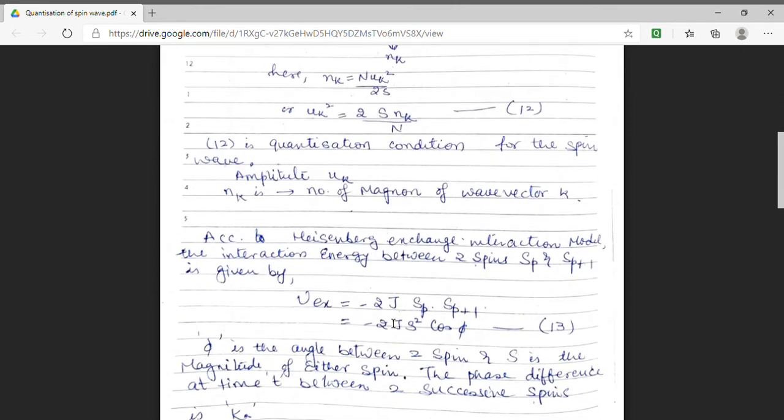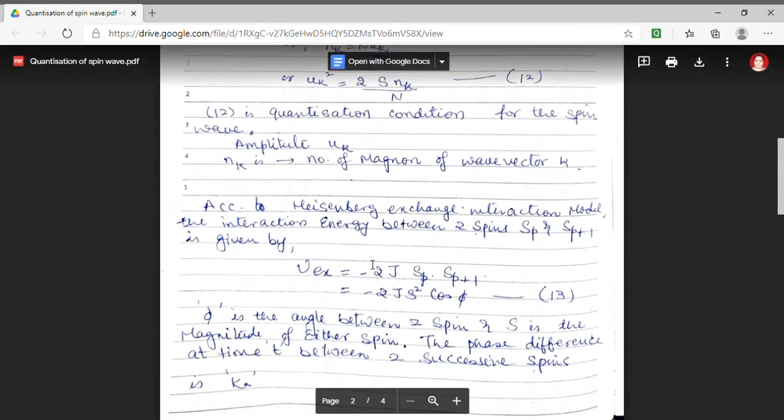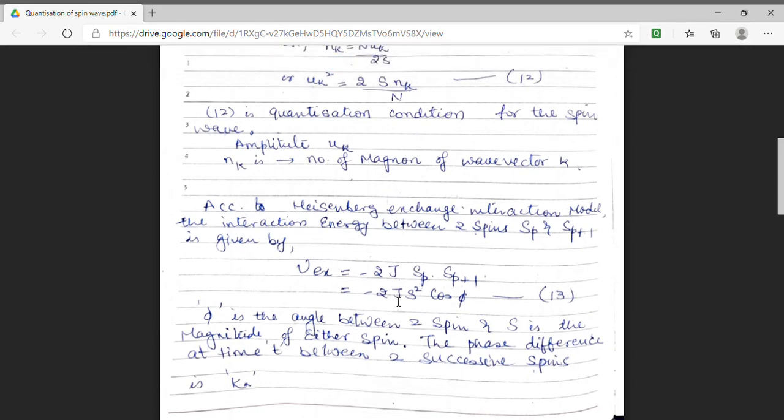Now, as we know that Heisenberg exchange interaction energy between two spins, neighboring spins SP and SP plus 1, it will be equal to minus 2J, SP dot SP plus 1. Let the angle between the two neighboring spins be phi. And the magnitude of each spin is S. Then, if the phase between them is phi, then the energy will be uEx minus 2J, S square cos phi.